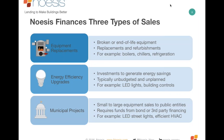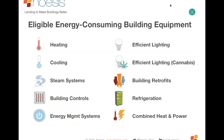We have different products specifically designed for munis, different products for EE, and custom credit packages designed for replacements. Equipment types include heating and cooling, chillers and boilers, steam systems, building controls, energy management systems, refrigeration, lighting, and lighting for cannabis. We can also combine service agreements as part of the total project solution — so if you're selling a new boiler with a $15,000 annual service agreement, we can finance all of that together.